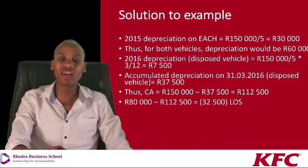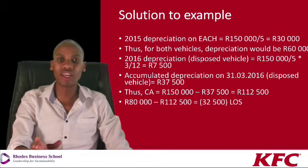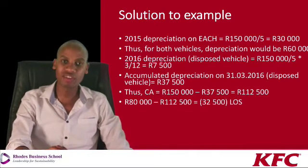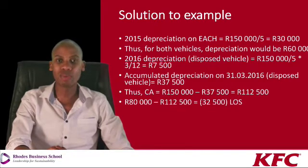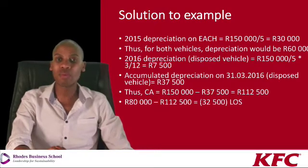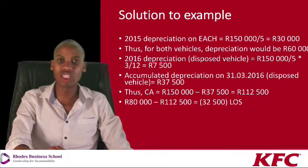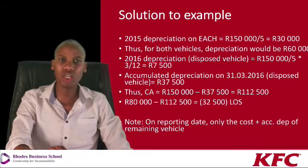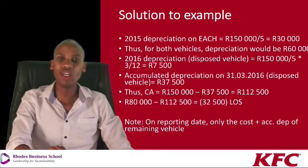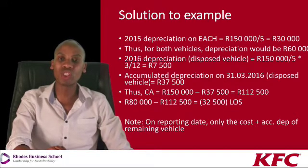We can now work out the profit or loss on disposal: the difference between the proceeds and the carrying amount. Since the carrying amount of R112,500 exceeds the proceeds of R80,000, we realise a loss, which is recognised in operating expenses. On the reporting date of 31 December 2016, we only reflect the cost and accumulated depreciation of the remaining vehicle — the disposed vehicle should not appear, as it was de-recognised on 31 March 2016.